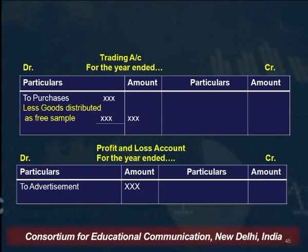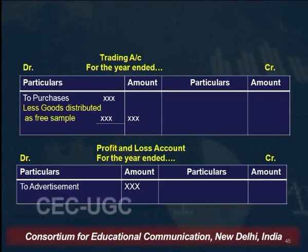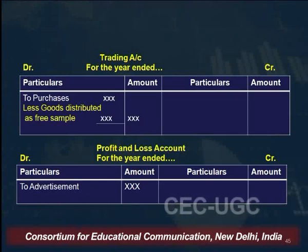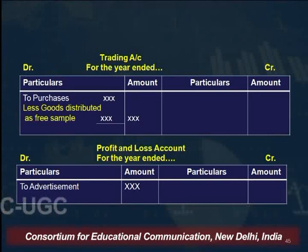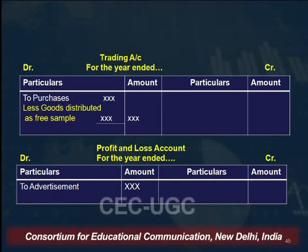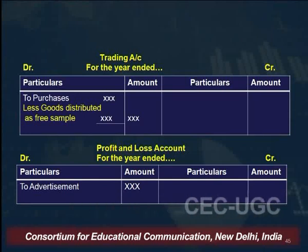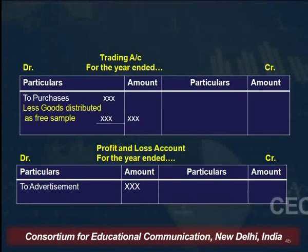Either you can deduct goods distributed as free samples from purchases and show on the debit side, or show on the credit side of the trading account. Since it is an indirect expense, it is shown on the debit side of the profit and loss account.